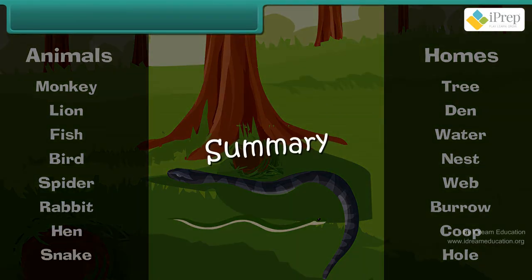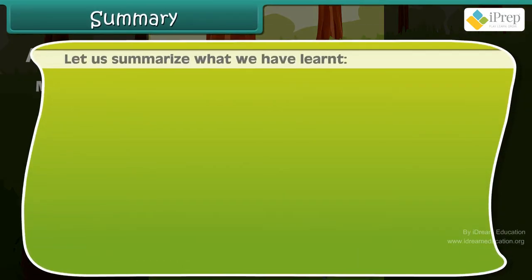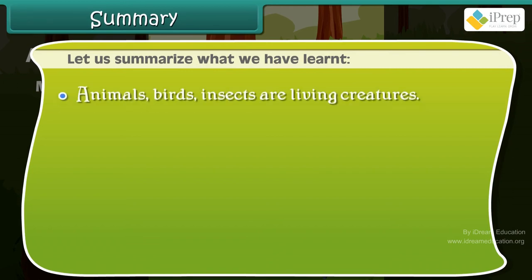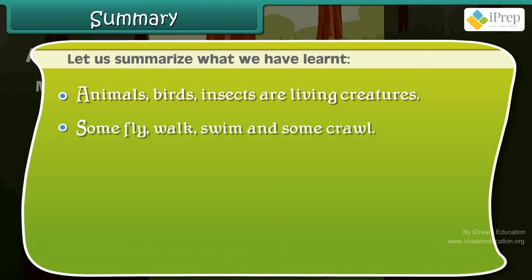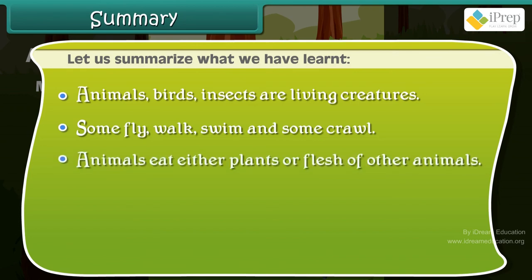Let us summarize what we have learned. Animals, birds, and insects are living creatures. Some fly, walk, swim, and some crawl. Animals eat either plants, flesh, or other animals.